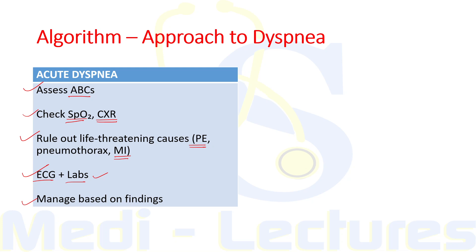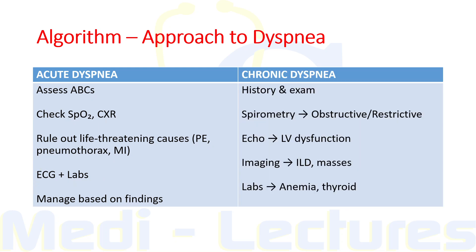On the other hand, if a chronic dyspnea patient comes to the OPD, we take a detailed history and examination. We can order spirometry to differentiate obstructive versus restrictive pulmonary causes, echo to assess LV dysfunction, and imaging including chest X-ray. If chest X-ray cannot find the cause, HRCT can be ordered to diagnose ILD and masses, along with labs like CBC and thyroid function tests.